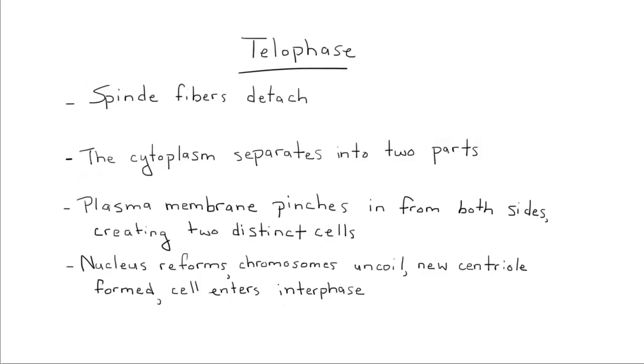And during the last phase of mitosis, the spindle fibers are going to detach. The cytoplasm begins to separate into two parts. The plasma membrane is going to pinch in from both sides, and the nucleus is going to reform. Chromosomes begin to uncoil. New centrioles are formed, and the cell is going to begin to re-enter interphase.